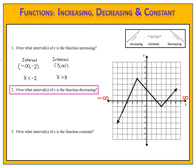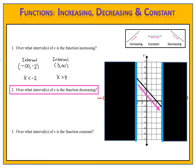The second question asks over what intervals of x is the function decreasing. We see that happens in one location on the graph, so we draw our blue guidelines. This time we have a starting spot and an ending spot. We focus on that section of the graph and look at the x-axis — negative 2 to positive 3. We write that as our interval where the function is decreasing, either using interval notation, negative 2 comma 3, or a single compound inequality: negative 2 is less than x is less than 3.